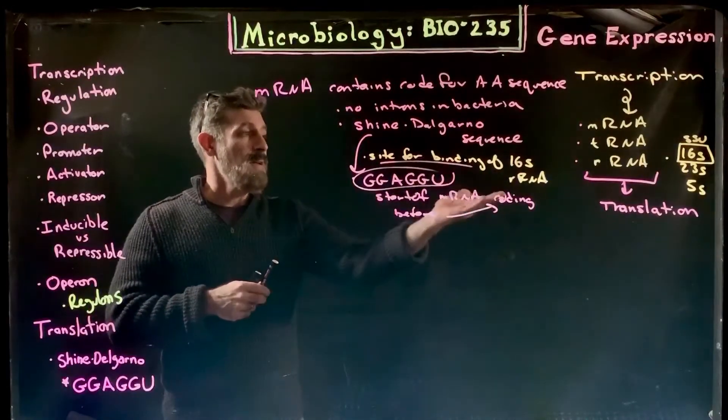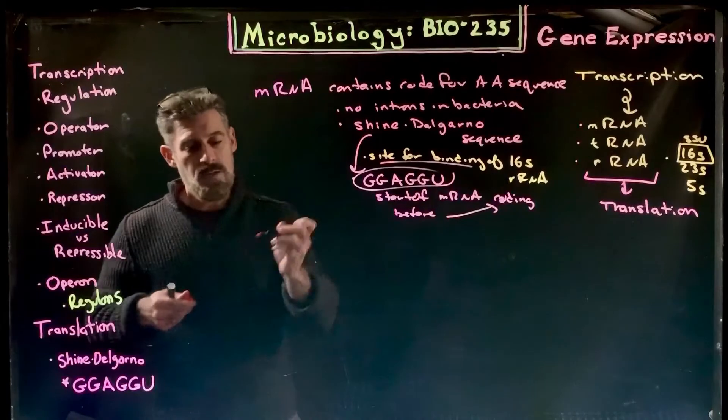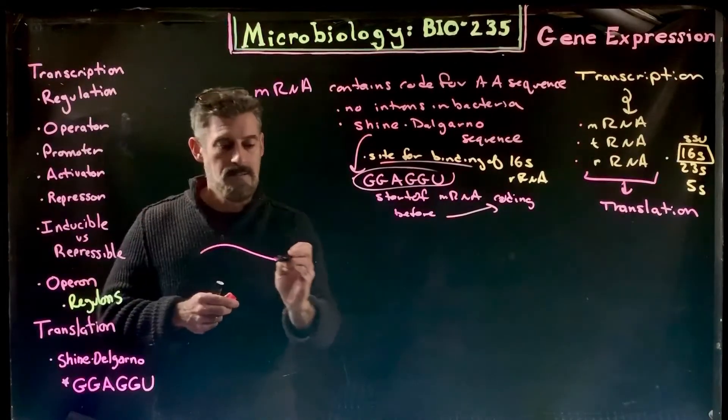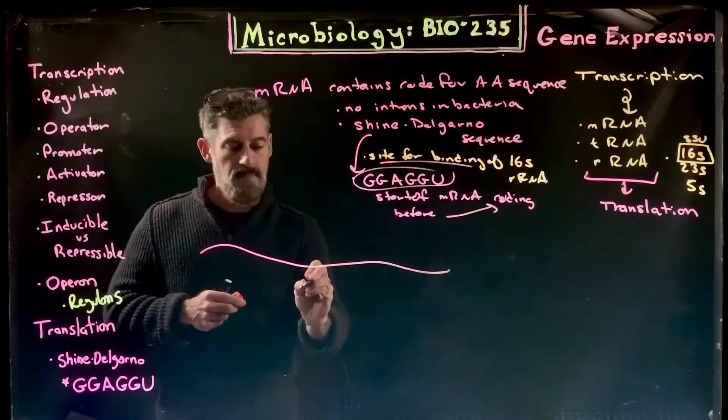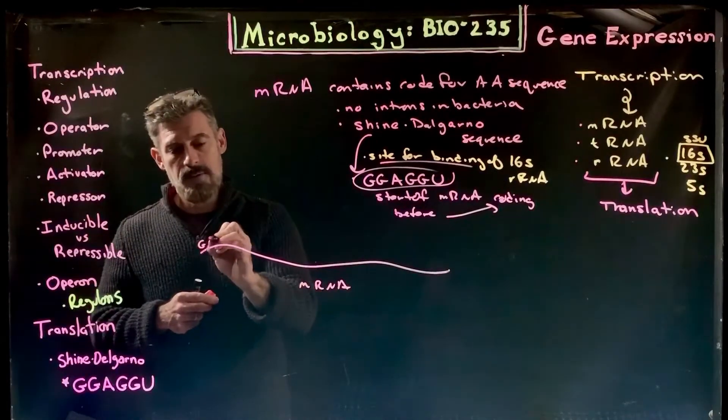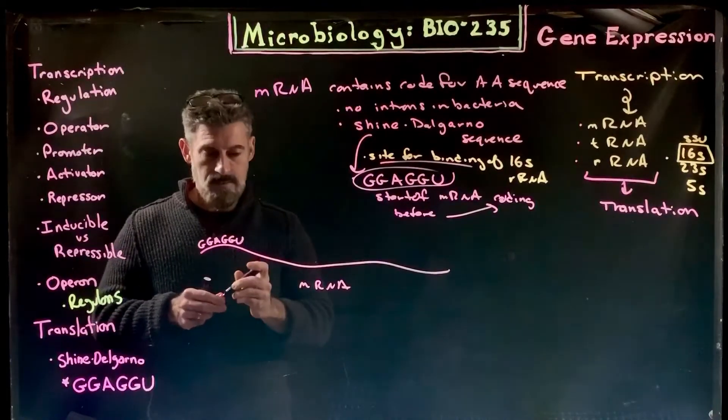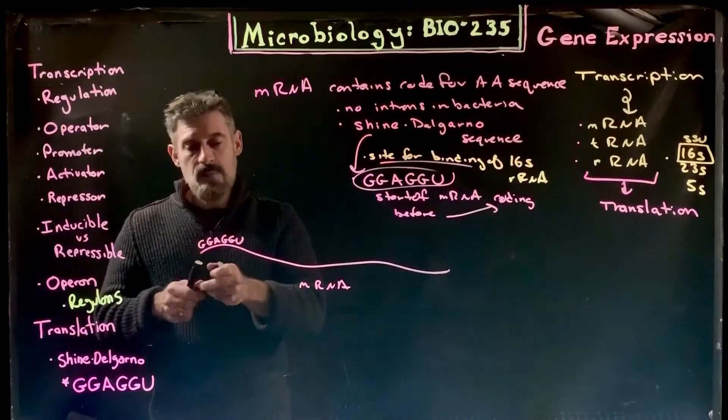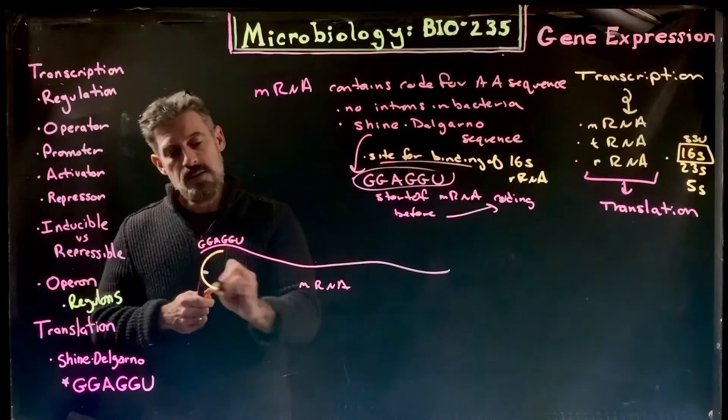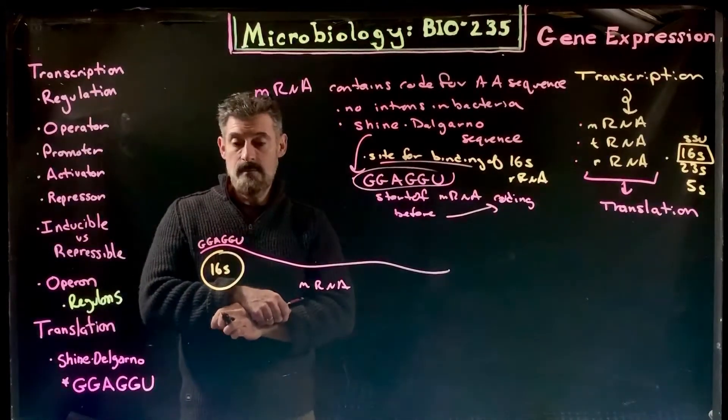The ribosomal RNA will be manufactured into small and large subunits. In bacteria we have 16S, 23S, and 5S, which is different than in eukaryotes where you have 18S, 28S, 5.8S, and 5S. What you'll have then is a piece of messenger RNA with the Shine-Delgarno sequence instead of a 5' cap.